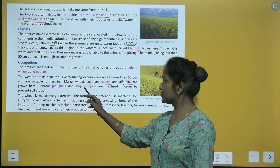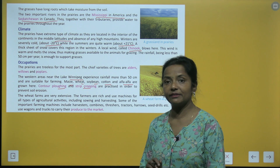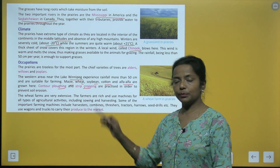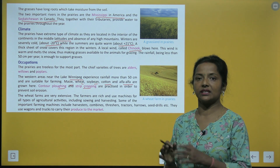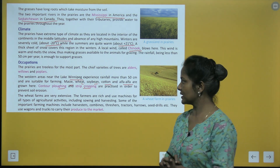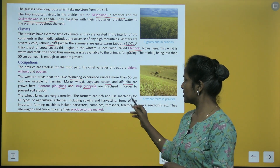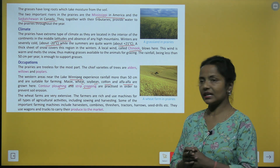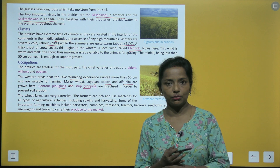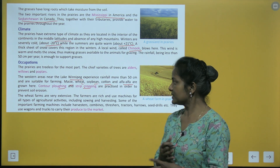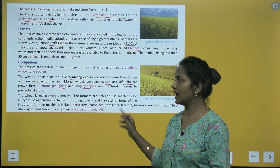Contour plowing and strip cropping are practiced in order to prevent soil erosion. The wheat farms are very extensive. The farmers are rich and use machines for all types of agricultural activities, including sowing and harvest.